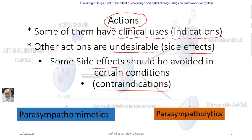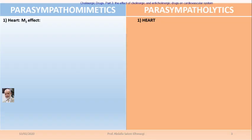In the present presentation, inshallah, we are going to talk about the actions of cholinergic and anti-cholinergic drugs in a comparative way — we will compare the action of parasympathomimetics on certain organs with those produced by the parasympatholytics on the same organ. Today we will discuss the action on the cardiovascular system: the heart, blood vessels, and blood pressure.